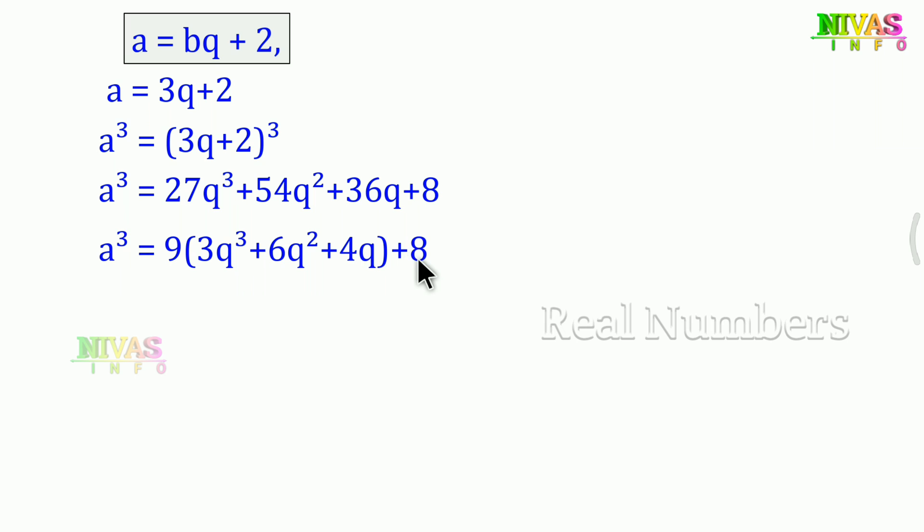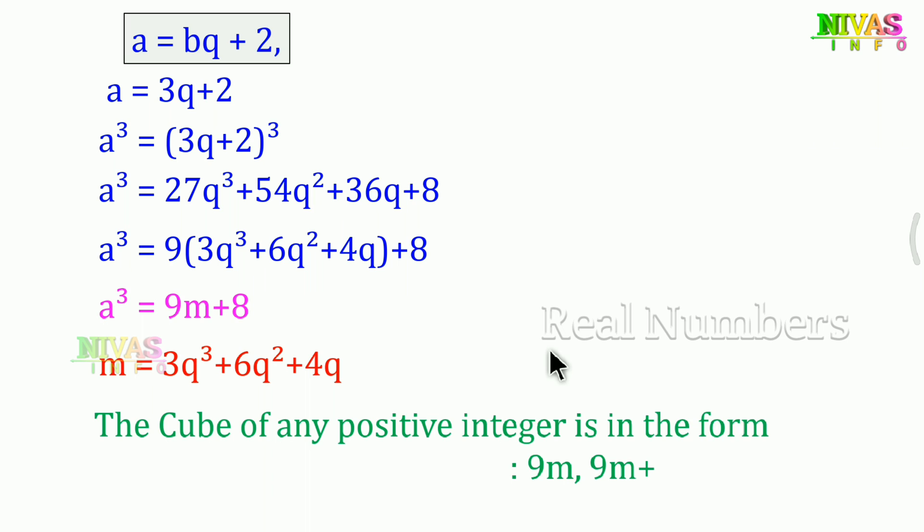Taking 9 common from the divisible terms: 9(3q³ + 6q² + 4q) + 8. This gives us 9m + 8, where m = 3q³ + 6q² + 4q. Therefore, we've proven that the cube of any positive integer is of the form 9m, 9m+1, or 9m+8.